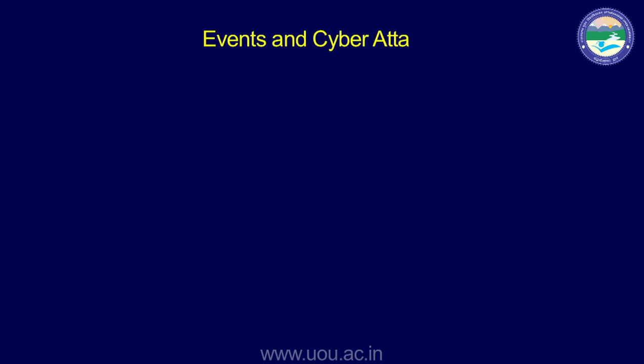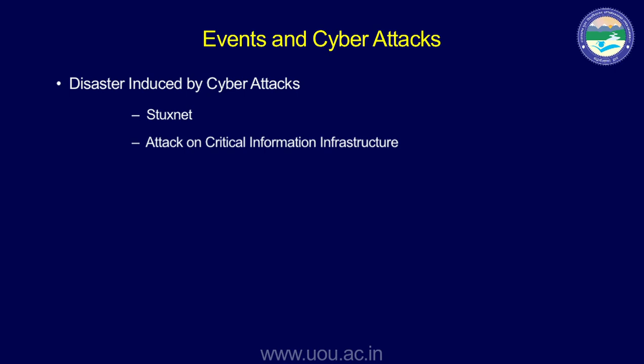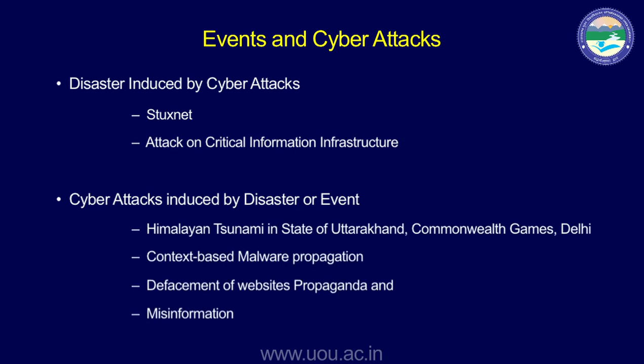There is a relationship between events and cyber attacks. First is disaster induced by a cyber attack — a cyber attack can cause disaster by attacking industrial control systems or critical infrastructure such as a hydrodam, a nuclear plant, or power plants. Another dimension is that whenever there is an event — suppose we are hosting the Commonwealth Games, the Olympics, or any other event, or a disaster like the Himalayan Tsunami of 2013 — cyber attackers use that opportunity to launch attacks in the context of that event.